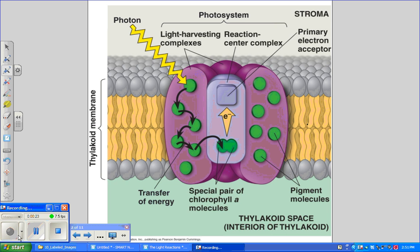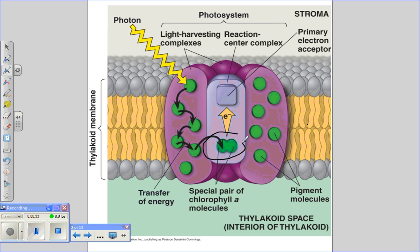Each photosystem is composed of proteins and around 300 pigment molecules. Only two of the pigment molecules, the two chlorophyll A molecules in the reaction center, are going to actually participate in transferring an electron to the primary electron acceptor.